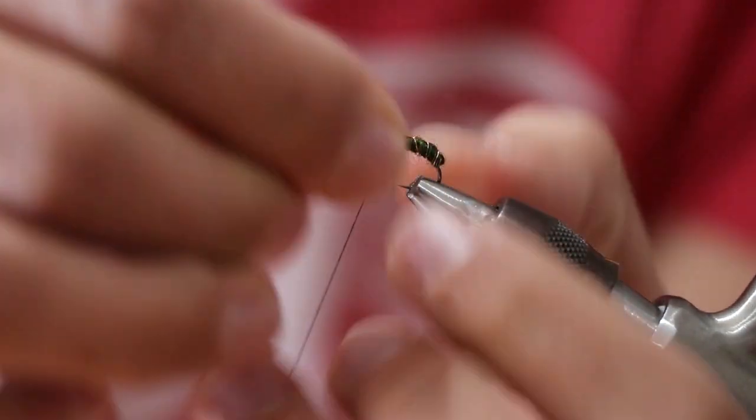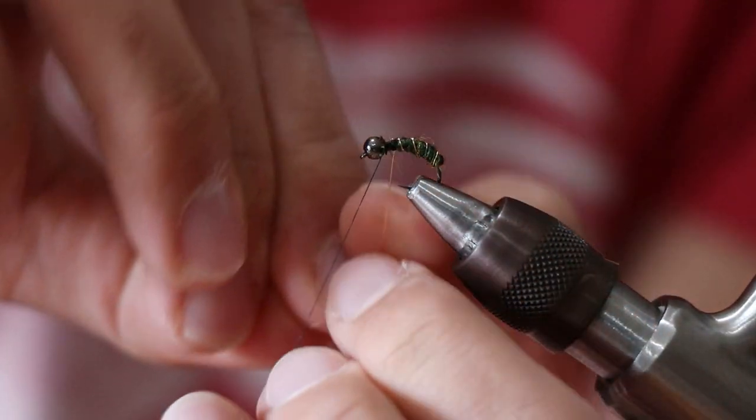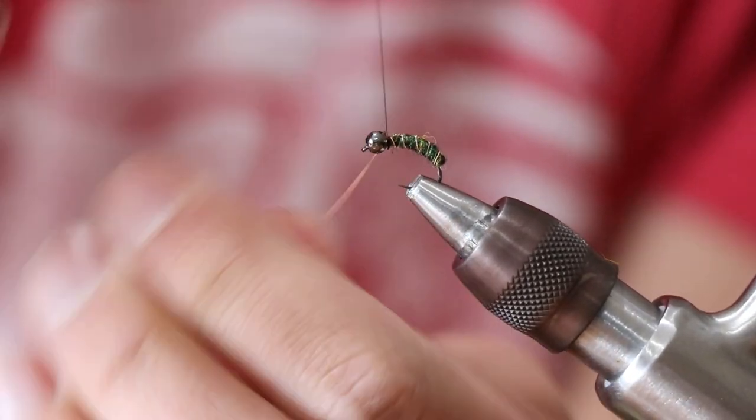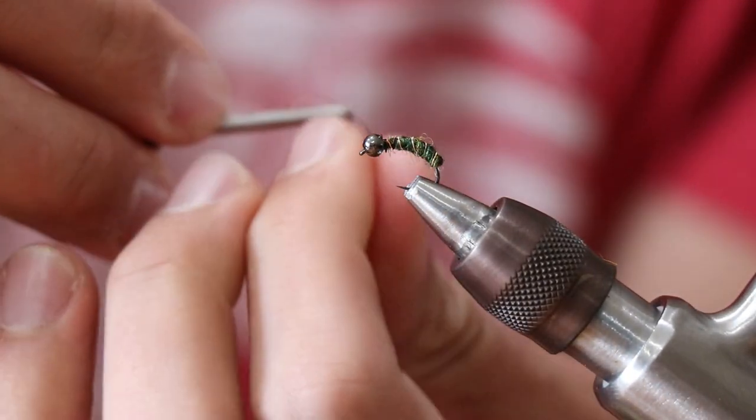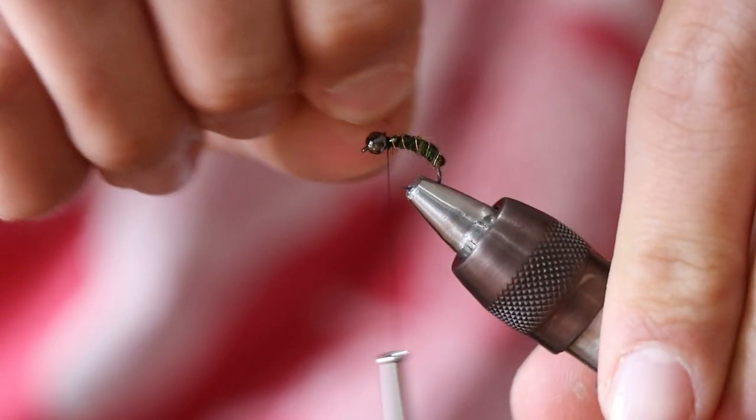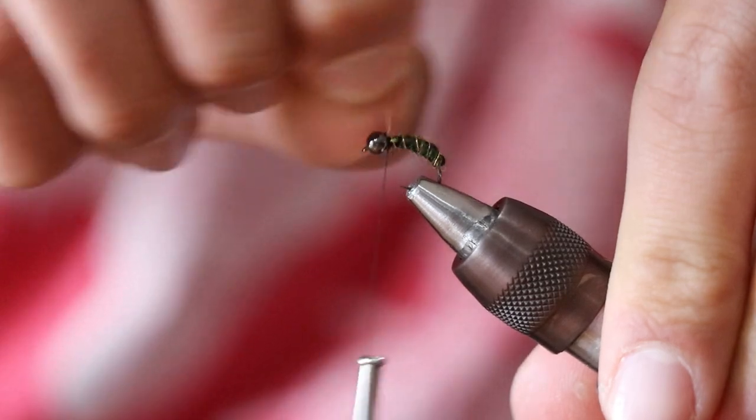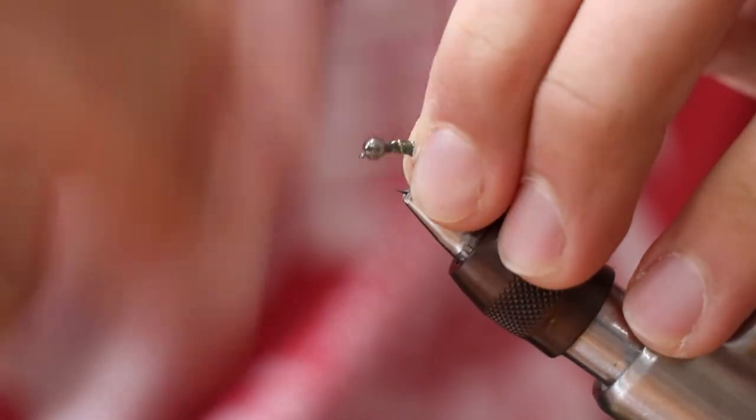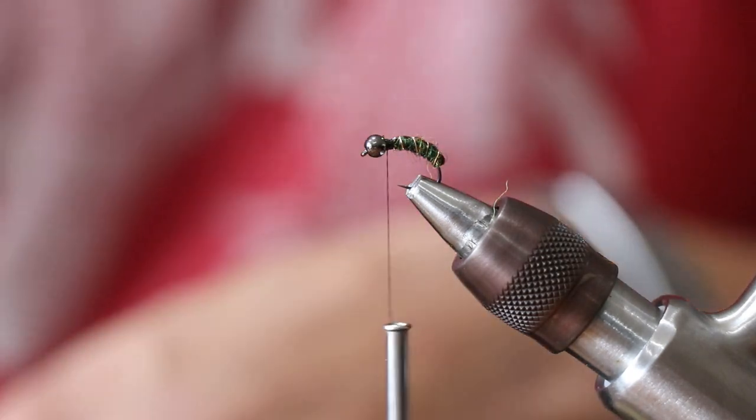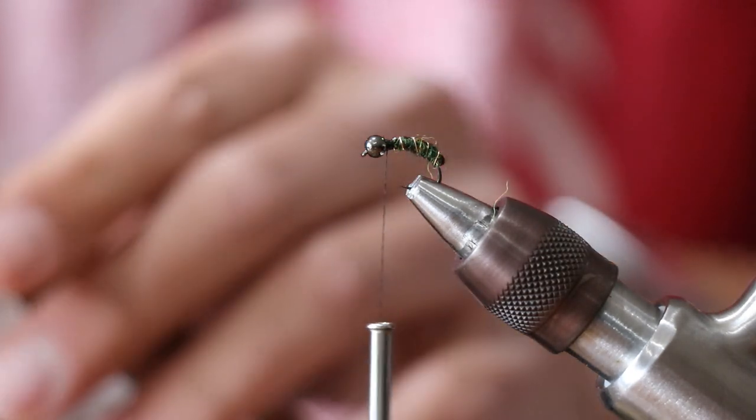Just like so. You can definitely do these in tons of different sizes. You don't have to do them weighted; that's just what I personally like to do. I'm just going to build up that dam just a bit, and then I'm going to come in with some hairline squirrel hair dubbing in red fox.